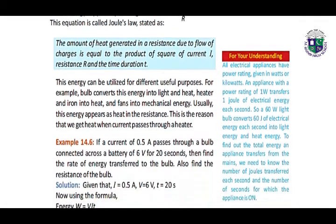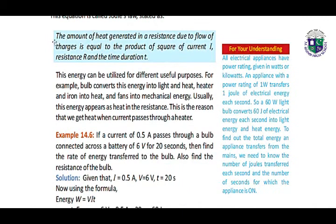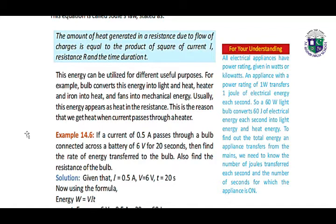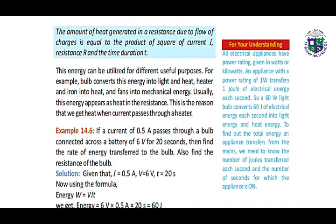According to Joule's law, the amount of heat generated in a resistance due to flow of charges is equal to the product of the square of current I, resistance R, and the time duration T. This energy can be utilized for different useful purposes — for example, a bulb converts this energy into light and heat, heater, fans. Usually, this energy appears as heat in the resistance.